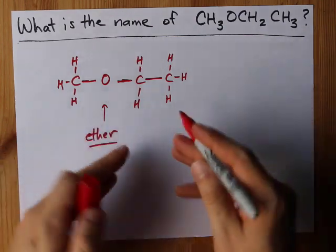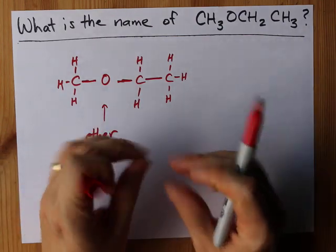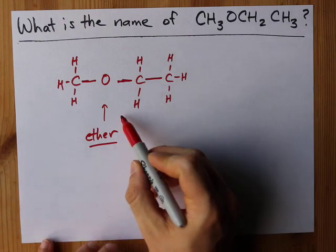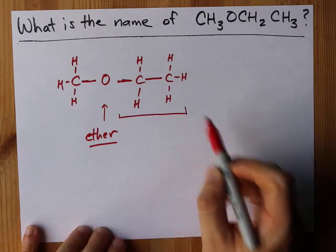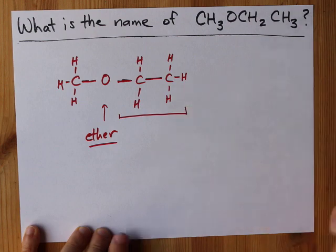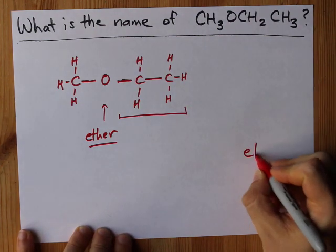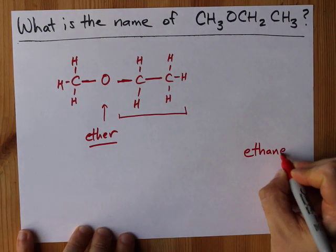Now there's a bunch of outdated ways of naming this. I'm going to give you the official name first. You find the longest carbon chain, which in this case is two carbons long. That's going to give you the root of your name. This is an ethane.